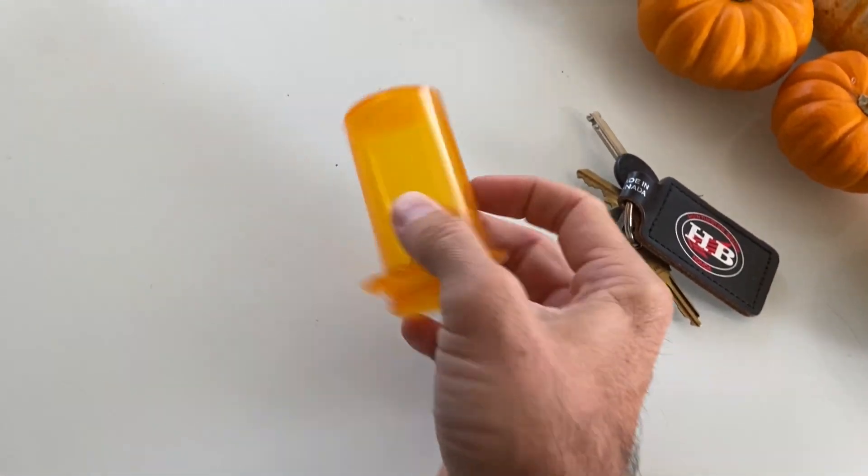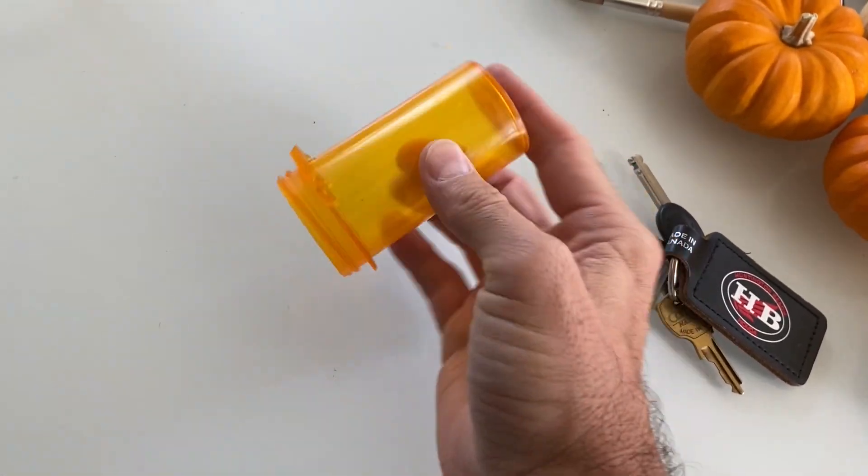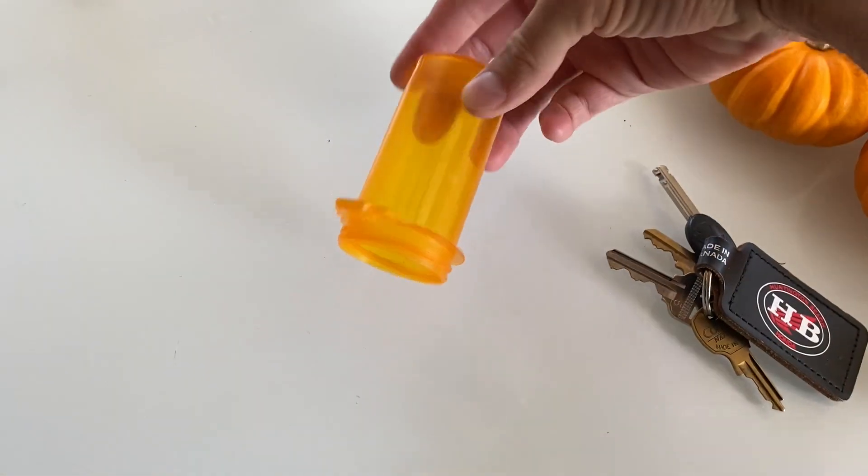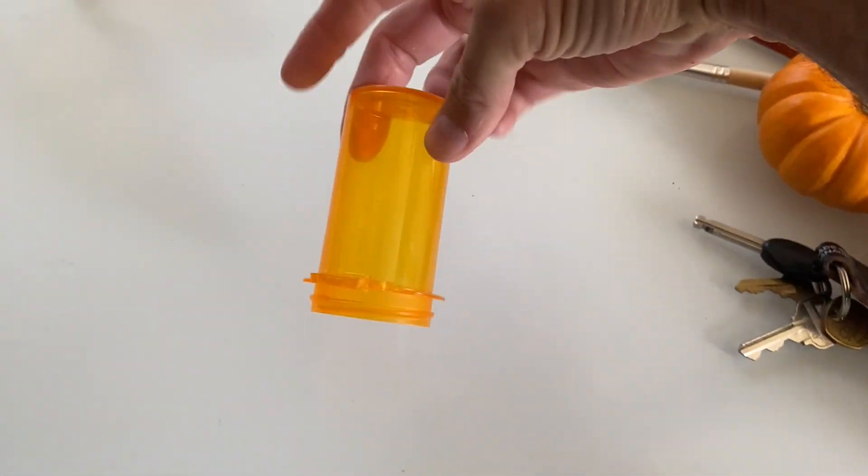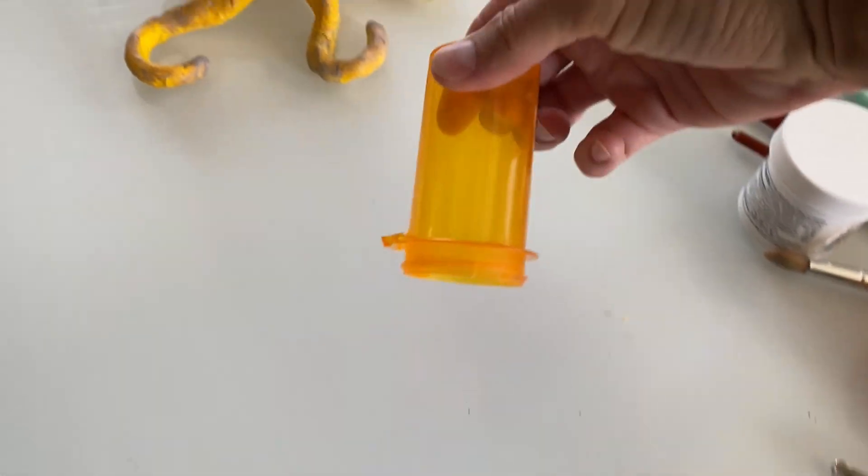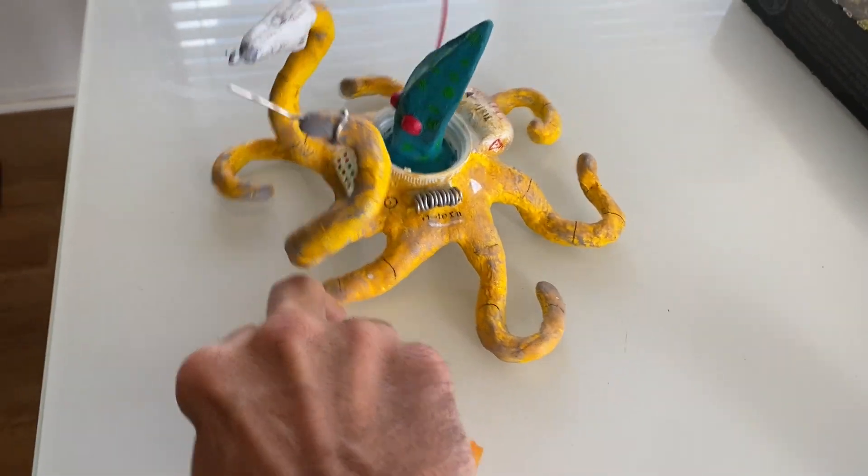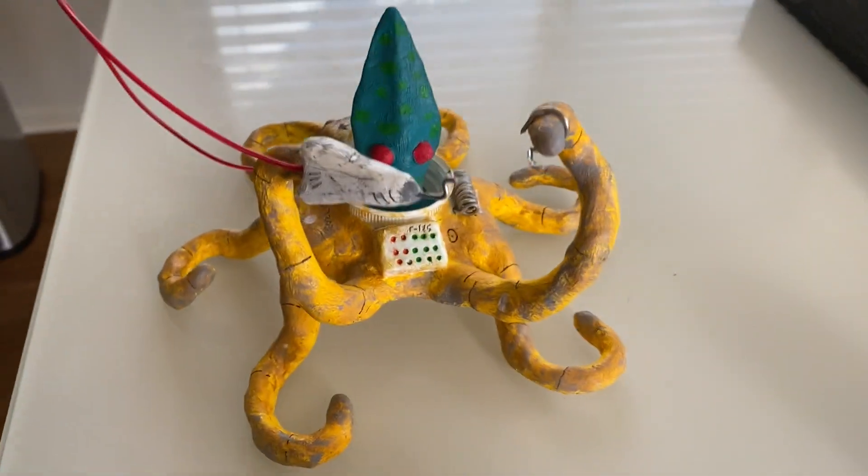I kept seeing these leftover pill bottles around and I thought, this is kind of a weird, funky, sort of space helmet type thing. And I thought, what kind of creature would have a space helmet? And of course, it would be a space squid.